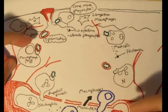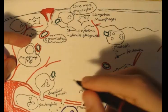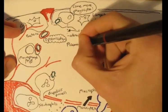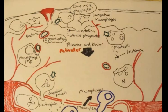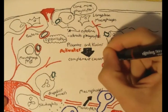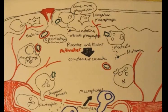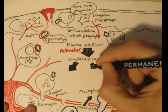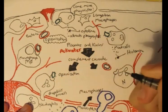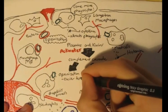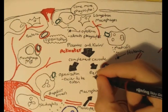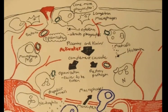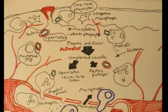The complement cascade can then either opsonize the pathogen, allowing it to be easily eliminated by phagocytes, or it can destroy the pathogen by rupturing its membrane. Click on the link to learn more about the complement proteins and how they initiate the complement cascade.